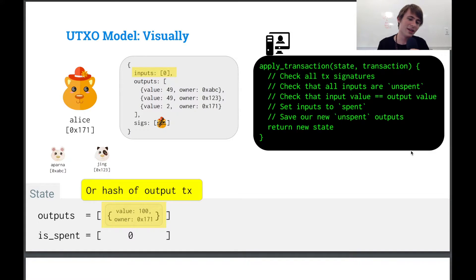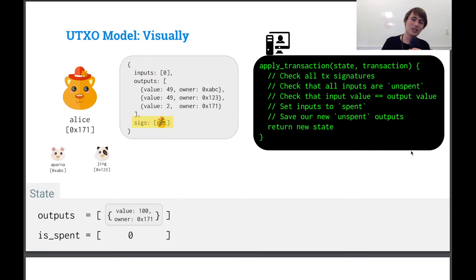And this transaction lists an input. And that input is our zeroth index of our list of transaction outputs. Or it could be the hash of our transaction. Right now we're using the index to reference it. But, you know, of course you can use the hash. So it also specifies a list of new transaction outputs. This time with 49 to each to Jing and to Aparna, and then two to herself. And then it has a signature with Alice's signature on it.